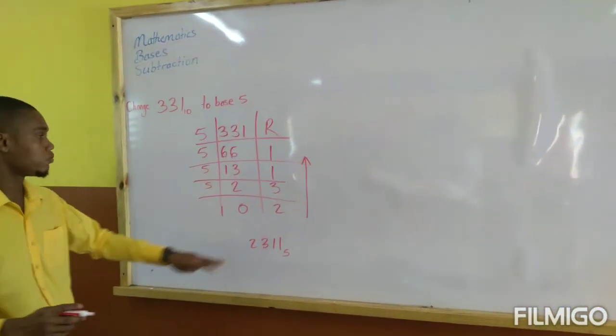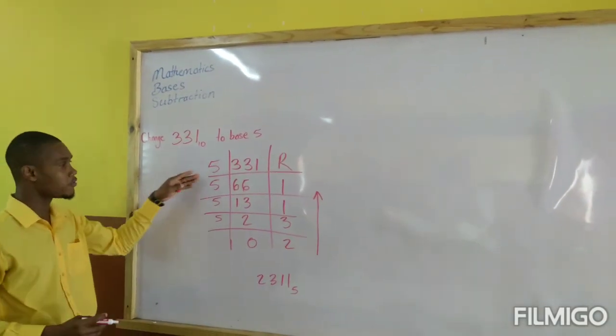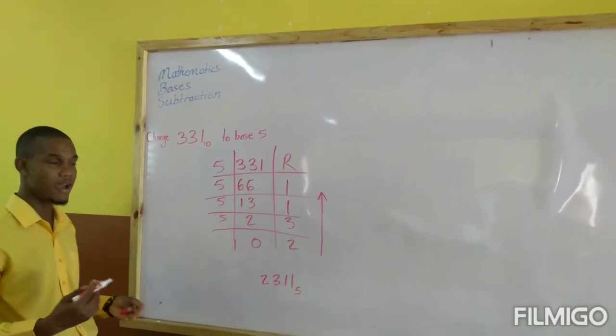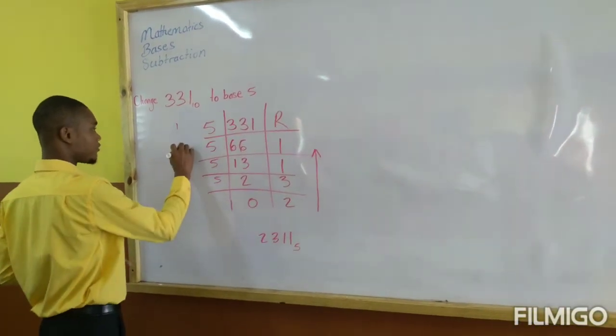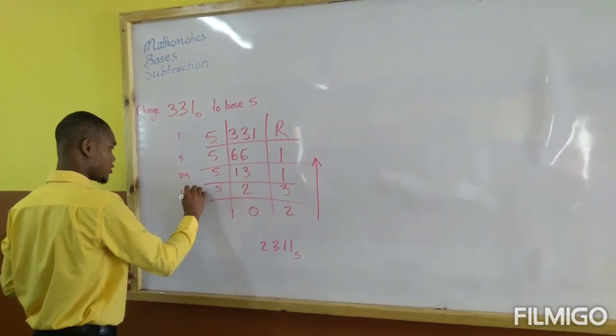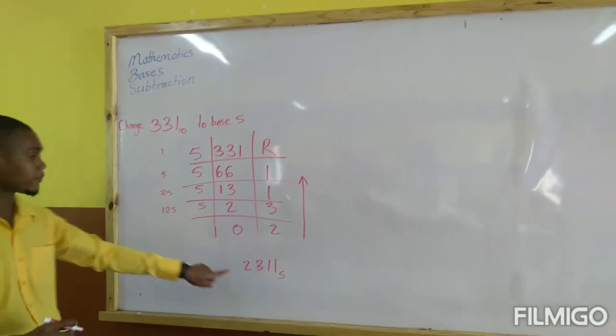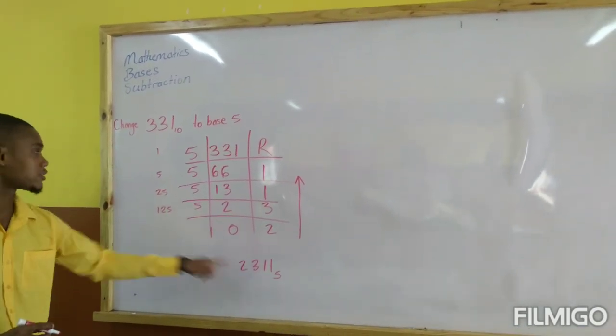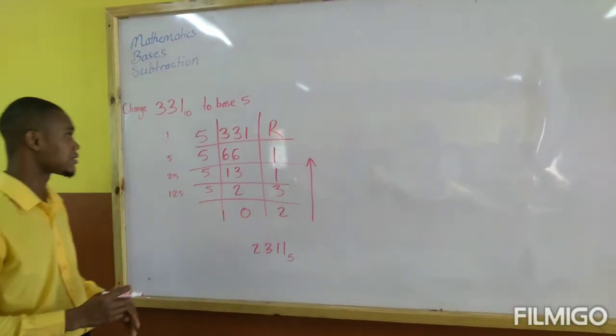The reason you write from the bottom going upwards is because of the modulus. The more you divide by 5, it means you are dividing by a larger place value. So this would be 1s, this would be 5s, this would be 25s, and this would be 125s. Because this is the largest place value, it has to be written first. Then 25s second, 5s third, and then 1s go last.